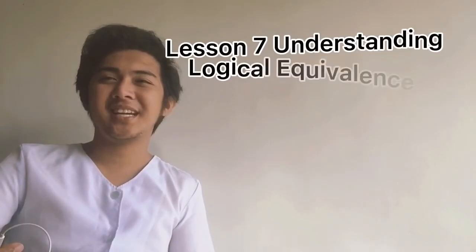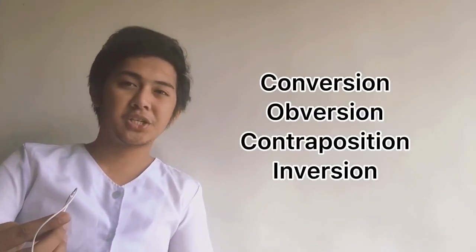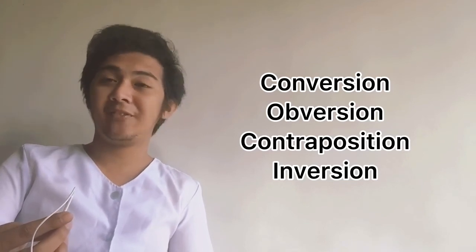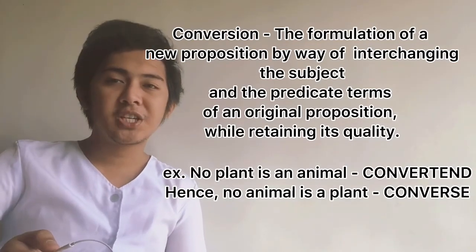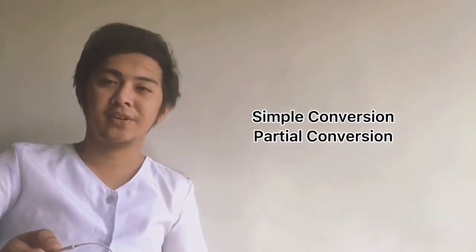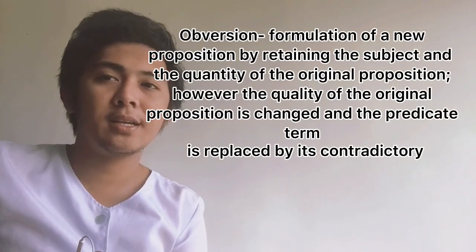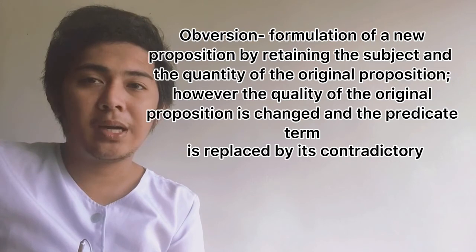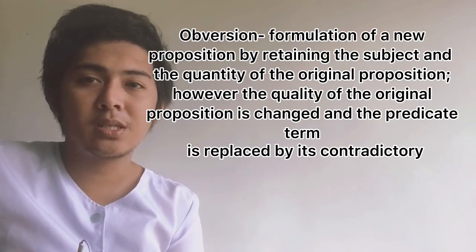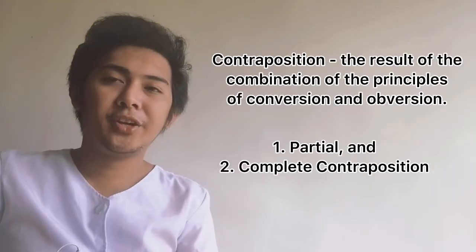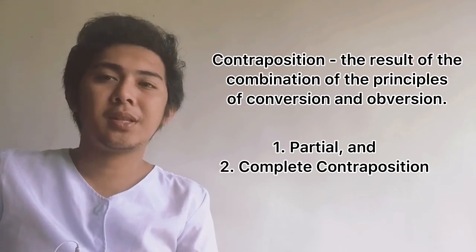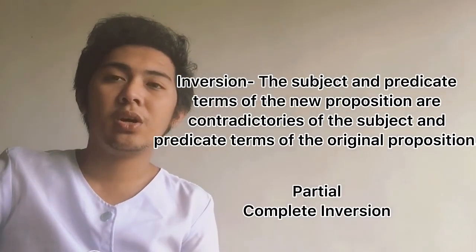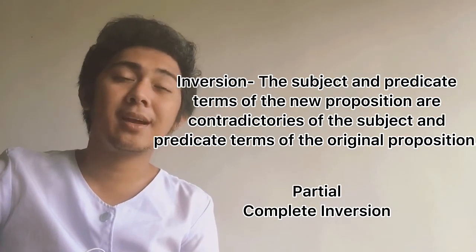Let's come now to Lesson 7: understanding logical equivalence or eduction. Logical equivalence has four methods: conversion, obversion, contraposition, and inversion. Conversion has two kinds — simple conversion and partial conversion. Obversion is the formulation of a new proposition by retaining the subject and quantity of the original, but changing the quality and replacing the predicate term with its contradictory. Contraposition has two types — partial and complete. Inversion also has two types — partial and complete inversion.